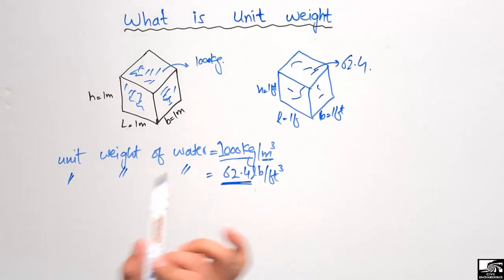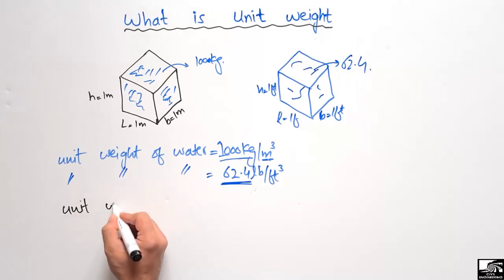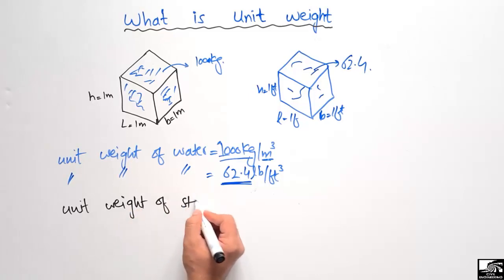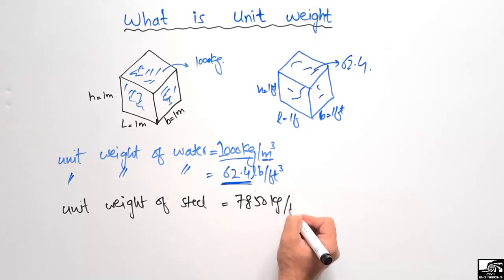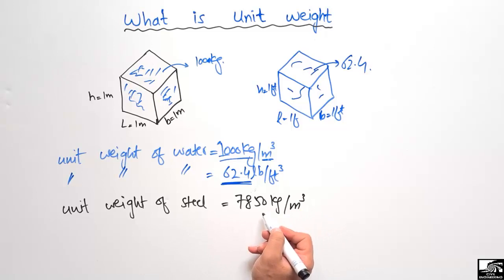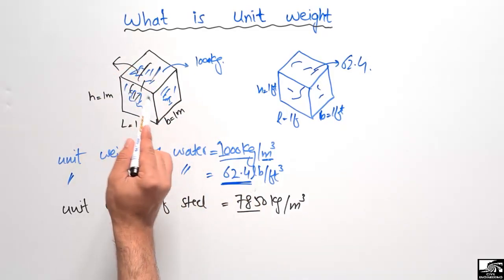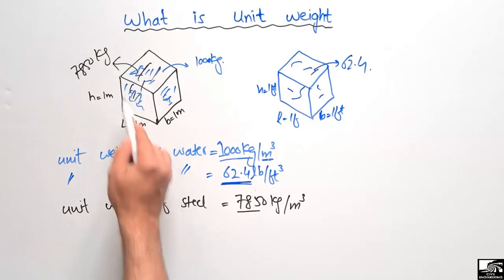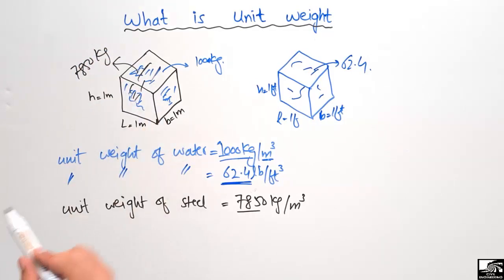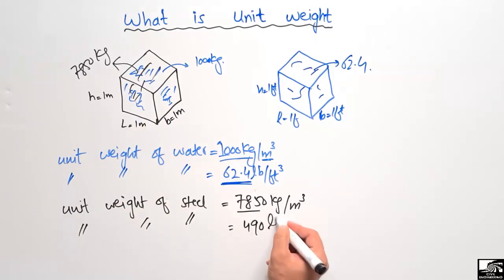The unit weight of steel is equal to 7850 kilogram per cubic meter, which is much higher than that of water. This means that 7850 kilograms of steel can fit in one cubic meter of volume. In pound per cubic foot, the unit weight of steel is 490 pound per cubic foot.